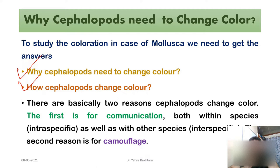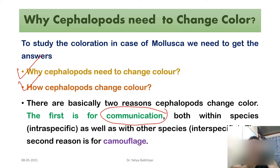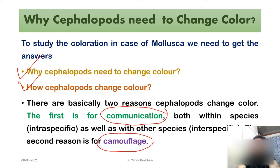The first reason for color change in cephalopods is communication — not only within the species but among different species as well. It can be intraspecific or interspecific. The second reason is camouflage — they need to hide and protect themselves from predators, and they also need to hide so that they can attack their prey.